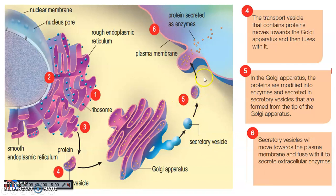The secretory vesicle fuses with the plasma membrane, and the enzyme exits the cell — becoming an extracellular enzyme. To summarize: protein is synthesized by ribosomes; the protein enters the rough ER lumen and is packed into a transport vesicle; the transport vesicle carries the protein and fuses with the Golgi apparatus; the Golgi apparatus modifies and packs the enzyme into a secretory vesicle; and finally the secretory vesicle fuses with the plasma membrane and the enzyme is secreted out of the cell.